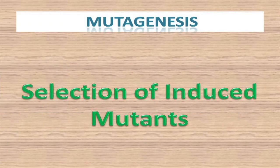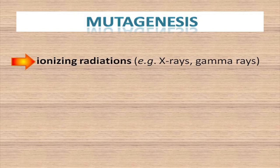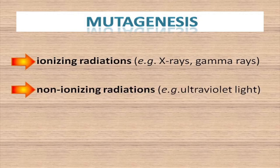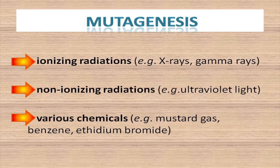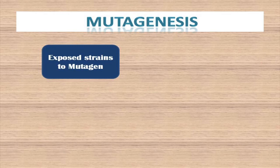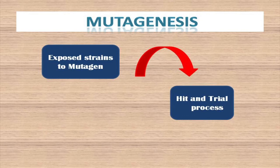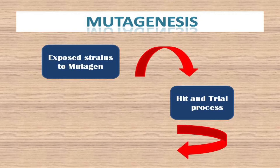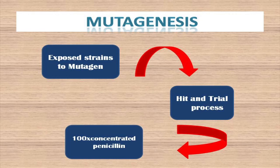Random mutagenesis involves the selection of induced mutants. There are several ways to induce mutagenesis, such as ionizing radiation, non-ionizing radiation, and various chemicals. It is done by exposing strains to mutagens. Some strains will have mutations, some will not — it depends on probability and a degree of luck. If luck favours, mutation could even produce strains capable of producing 100 times more product compared to normal.